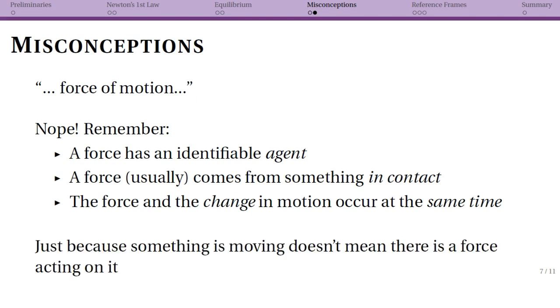So again, the thing to keep in mind is just because something is moving doesn't mean that there is a force acting on it. And the reason that that can be true is that your change in motion can be zero. And in that case you know that f net equals zero. I keep coming back to this since this is the mistake that students make the most here.